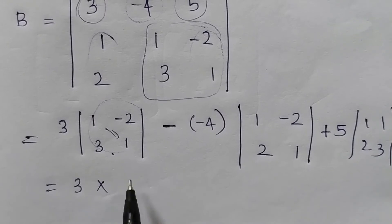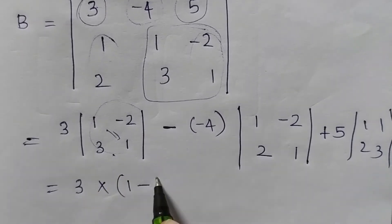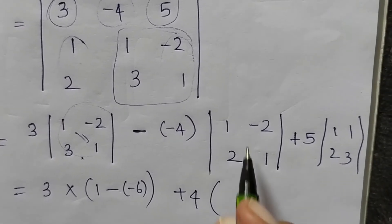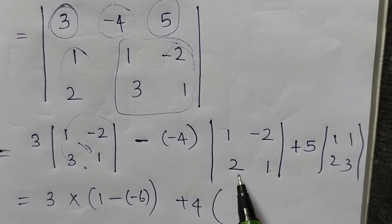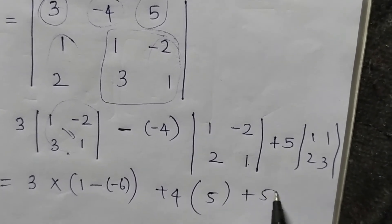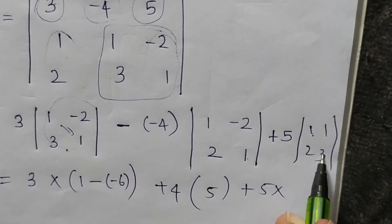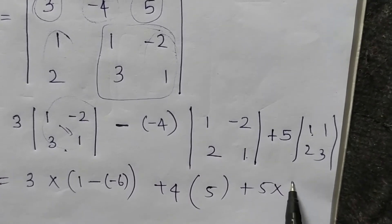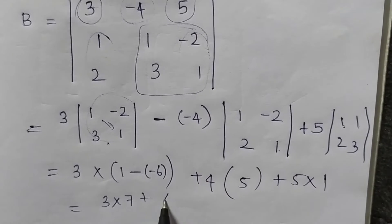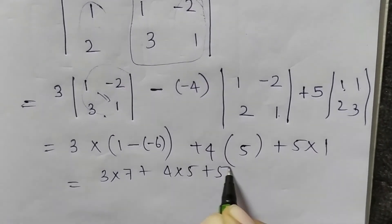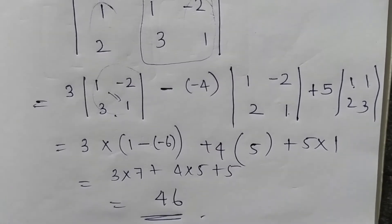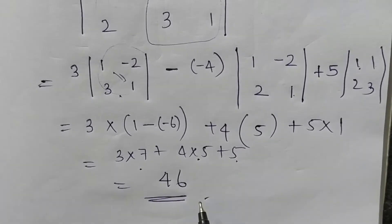1 into (1 minus minus 6), then minus (minus 4) gives 5. Plus 5 into (3 minus 2) equals 1. So we get 3 into 7 plus 4 into 5 plus 5, which gives 21 plus 20 plus 5 equals 46. That is the determinant value.